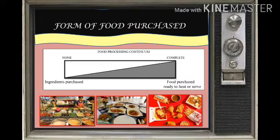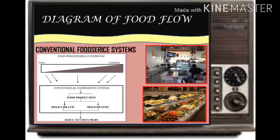Form of food purchase: here we see how the process of buying, cooking, and serving food to customers works using the different types of food service systems. For conventional, as seen in the diagram, both ingredients purchased and complete have lines — in conventional, ingredients can be bought from the market and then cooked immediately to be displayed at the food counter.